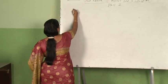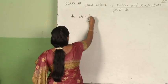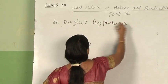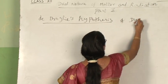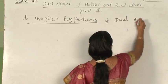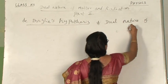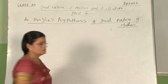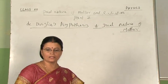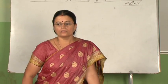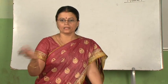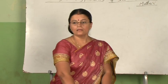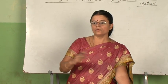Next, we will see De Broglie's hypothesis of dual nature of matter. In the previous class, I made mention about dual nature of matter and radiation. I clearly explained how the dual nature of radiation came into picture, and then I also mentioned dual nature of matter.